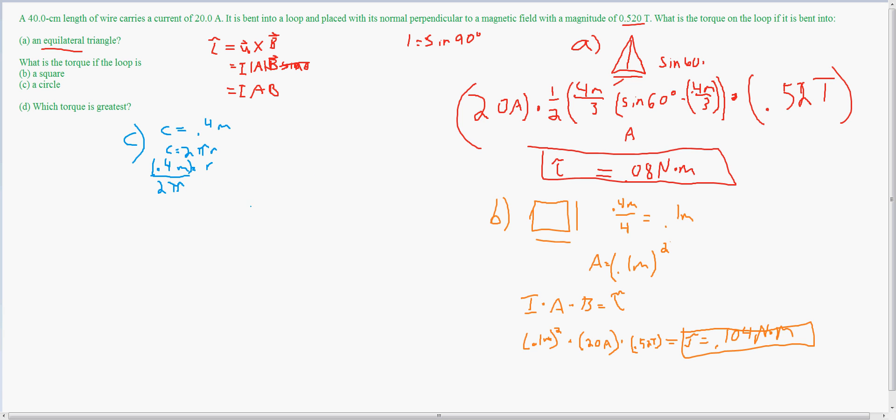Now we also know that the area of the circle is equal to pi r squared. So what I do is I input this for r. So I have A is equal to pi times 0.4 meters divided by 2 pi, squared. Let me do the math on that real quick.